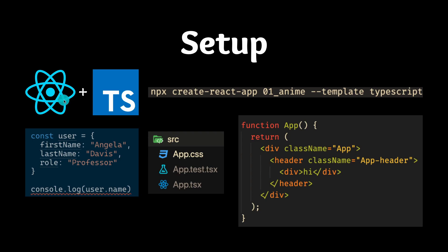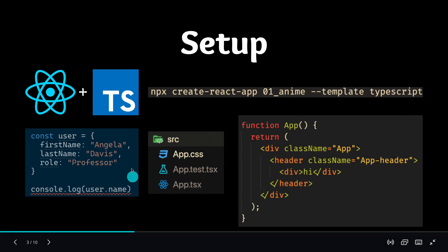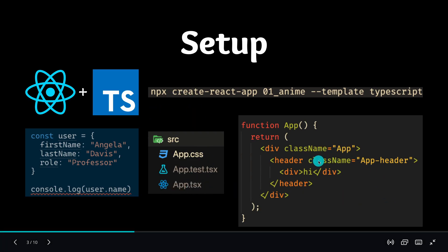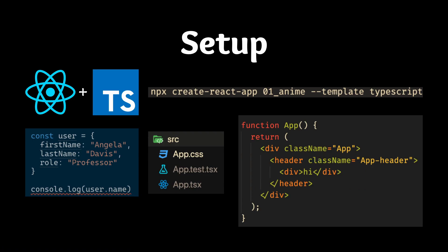Getting started with TypeScript in React is super straightforward. All you have to do is run the npx create-react-app command, specify the project name — in this case I do 'one_anime' — and then add --template TypeScript. What that does is instead of creating a folder with JSX and JavaScript files, it converts everything to TypeScript files. The one real file we care about for this project is the app.tsx file. You run this command, go to the app.tsx file, remove everything, display a 'hi', and that gets you up to speed.